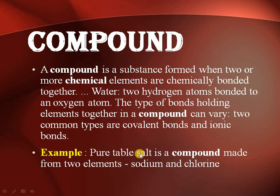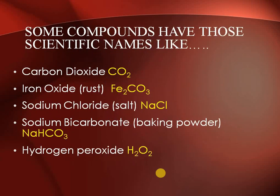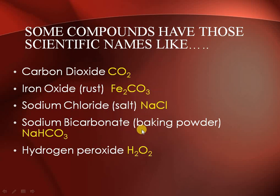For example, pure table salt is a compound because it is made up of two elements. Anything made up of two or more elements is a compound. Some examples: carbon dioxide (CO₂), iron oxide, sodium chloride (NaCl), sodium bicarbonate (baking powder), and hydrogen peroxide (H₂O₂) — all are compounds.